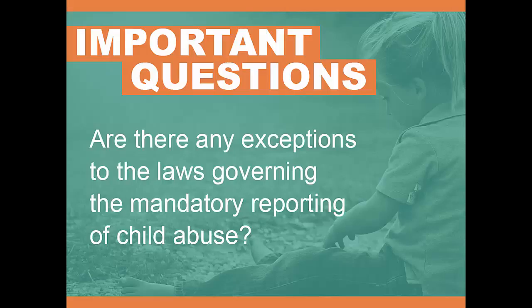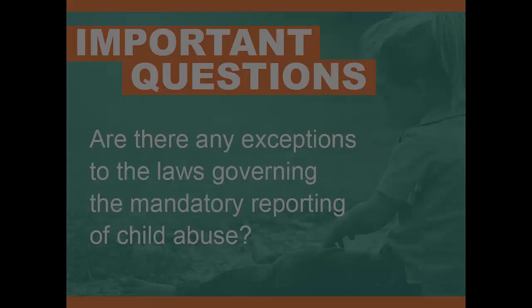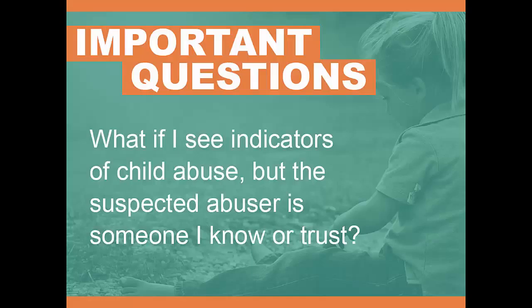For United Methodist clergy, anytime clergy learns of potential abuse, the pastor must report the suspected abuse to Childline. Question 2: What if I see indicators of child abuse but the suspected abuser is someone I know or trust? It is likely that the person whom you suspect as the alleged abuser will in fact be someone you know — someone you volunteer alongside, a parent or family member, or family friend of the child or youth. Those who abuse are 93 percent of the time someone who is known and trusted by the child and adults around the child. In nearly one half of all cases, the abuser is a member of the family or extended family. We must put the interest of the child first and make the report of suspected abuse even if it is someone we know and trust.